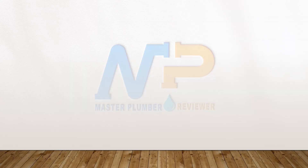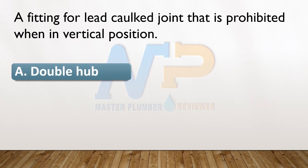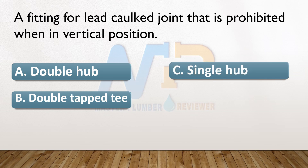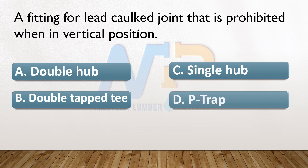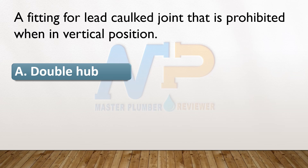Fitting for lead caulked joint that is prohibited when in vertical position. A. Double hub. B. Double tap. C. Single hub. D. P-trap. The answer: A. Double hub.